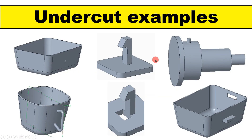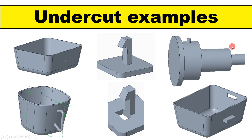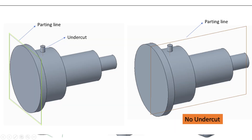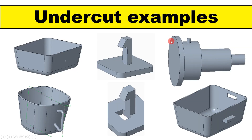Here you can see different examples of undercuts. In the first example, there is a hole — in the upward and downward pulling direction, this hole is the undercut feature. For the hinge arrangement, the flat bottom portion is an undercut feature. If you consider the middle of that plane as the parting line rather than the first portion, it will not be an undercut. So we need to either shift the parting line or use different pulling directions.